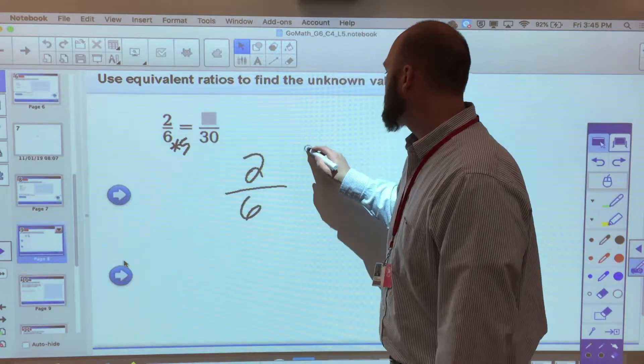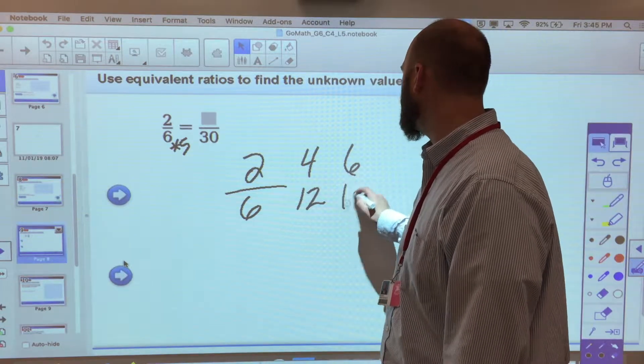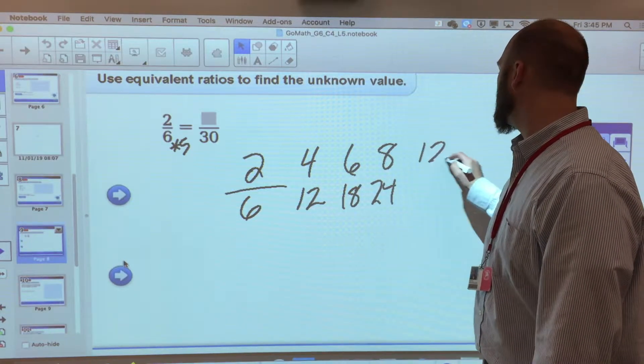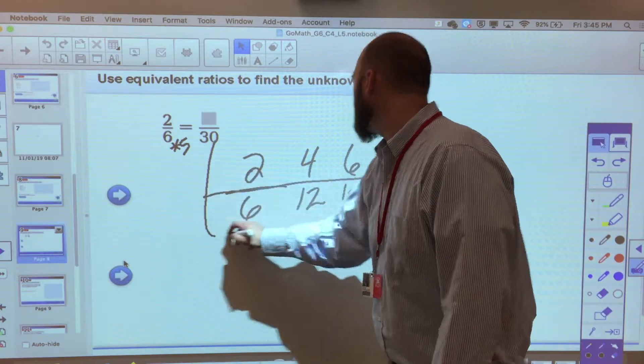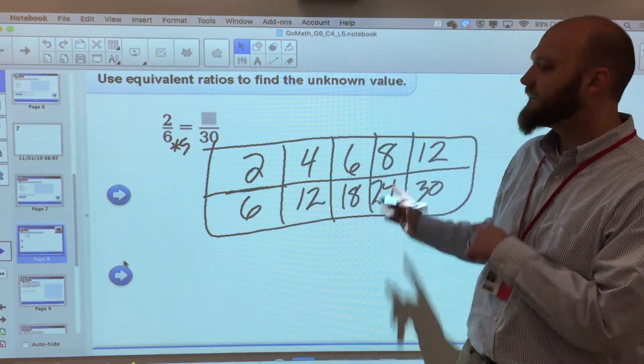Let's say 2 6ths, which would be 4 12ths, which would be 6 18ths, which would be 8 24ths, which would be 12 30ths, and so on and so forth. And I realize when I put all those fractions together, I in fact have a rate table.